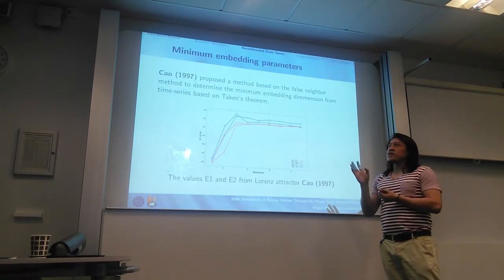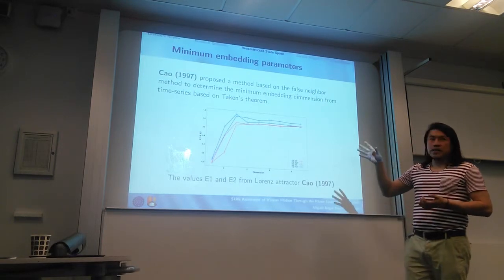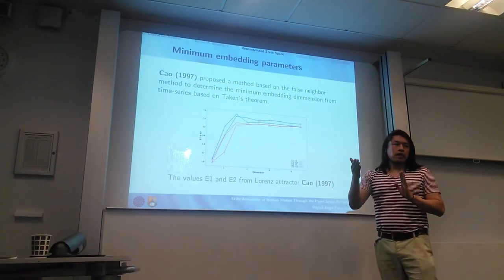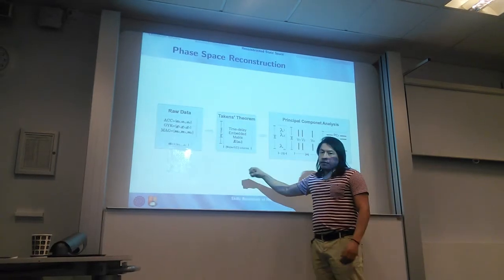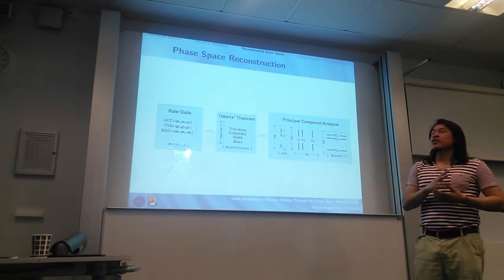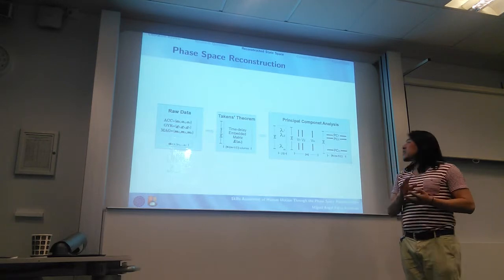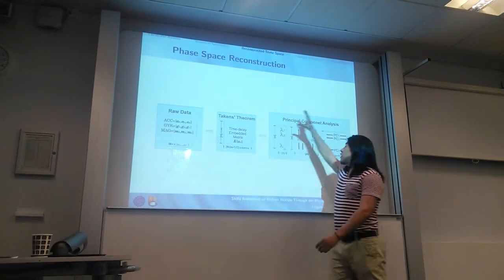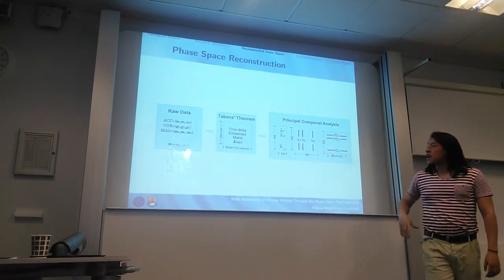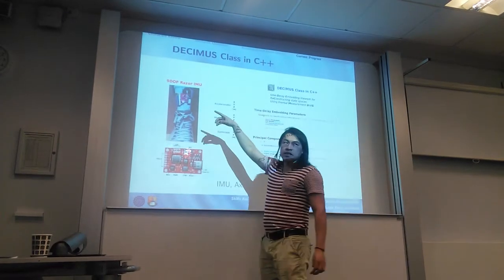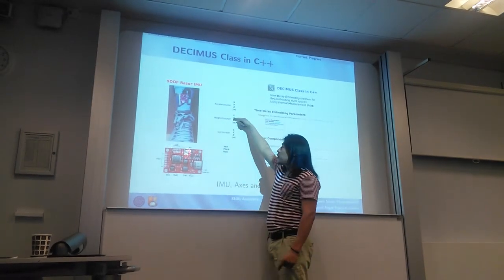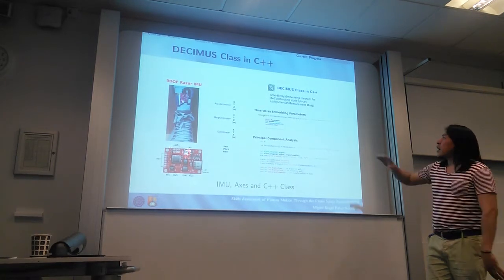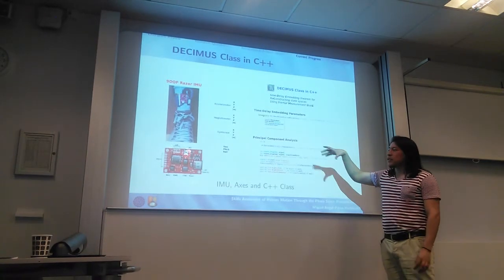In order to propose the minimal embedding parameters, we are using the CAO method, in which E1 values are used for obtaining the minimum embedding dimension, and E2 values are for distinguishing between noisy and deterministic signals. So the general pipeline is: collect data from inertial sensors, apply the Takens embedding, and then reduce the dimensionality using the PCA algorithm. We are collecting data using a cheaper inertial measurement unit which has an accelerometer, magnetometer, and gyroscope, sampling at 50 Hz, and using a C++ class to collect the data.